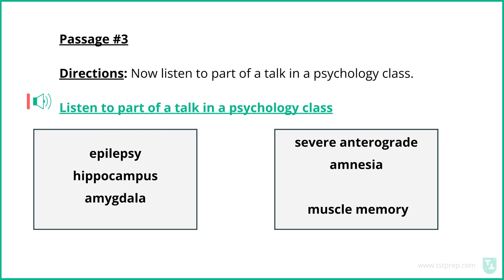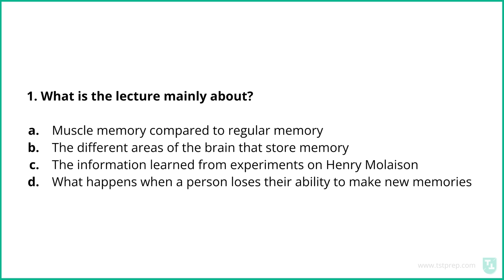While there were some benefits for research, Henry's unique amnesia made it almost impossible for him to remember any new events after the surgery. For example, the death of his parents occurred later in his life, and he couldn't remember it. Whenever he was reminded of his parents' demise, the pain returned as if he were hearing it again for the first time.